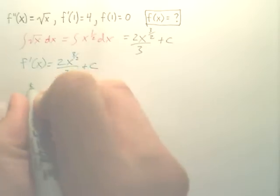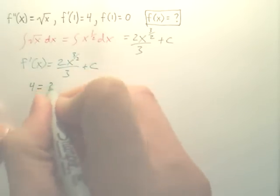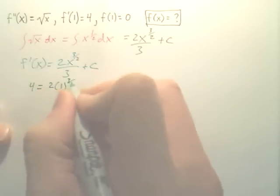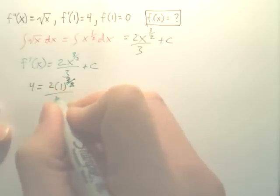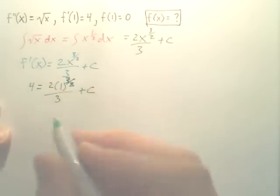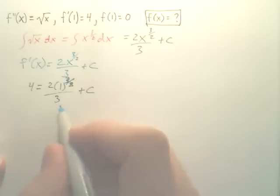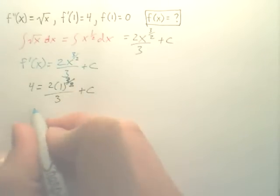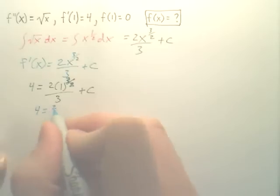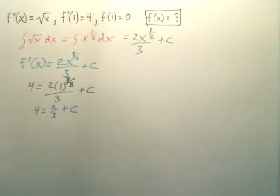So what we now have is four equals two times one to the three over two, over three plus c. Nice thing is one's pretty nice and easy. This becomes two-thirds. When you minus the two-thirds over to solve it.